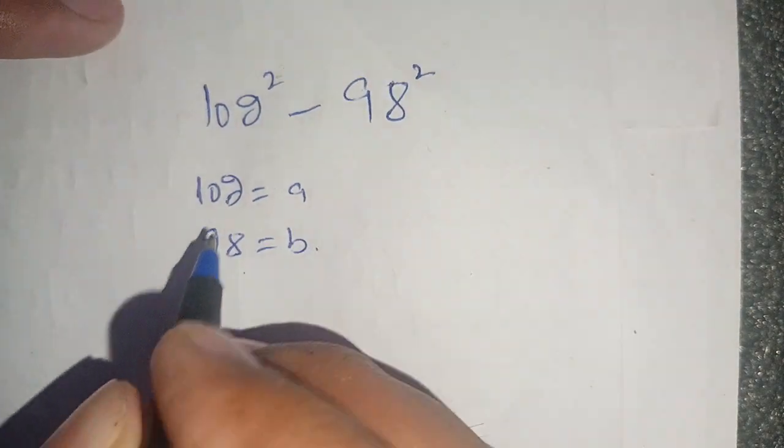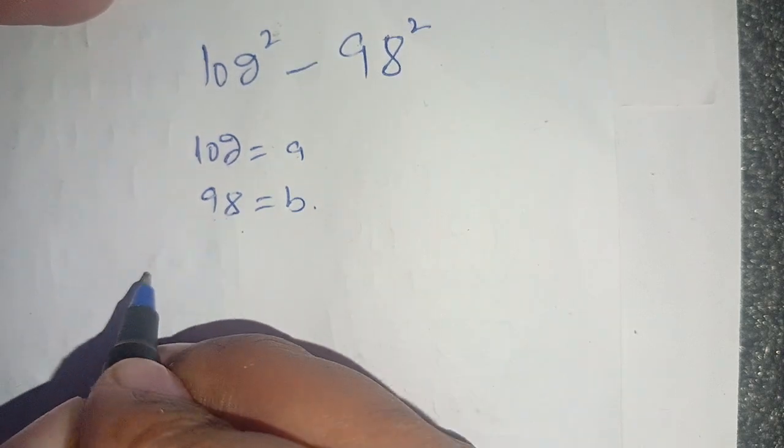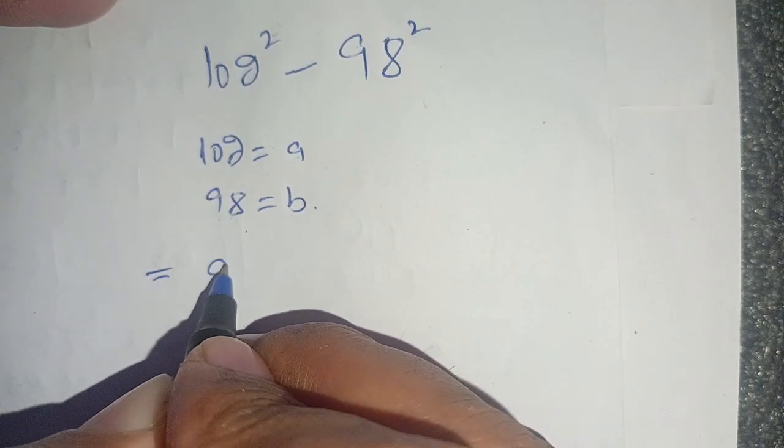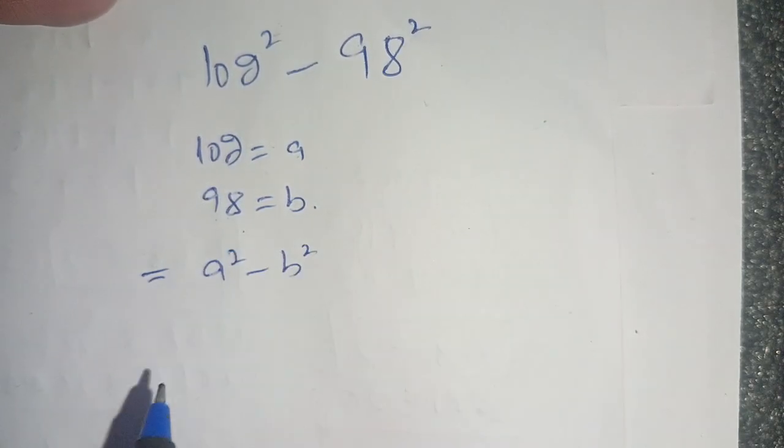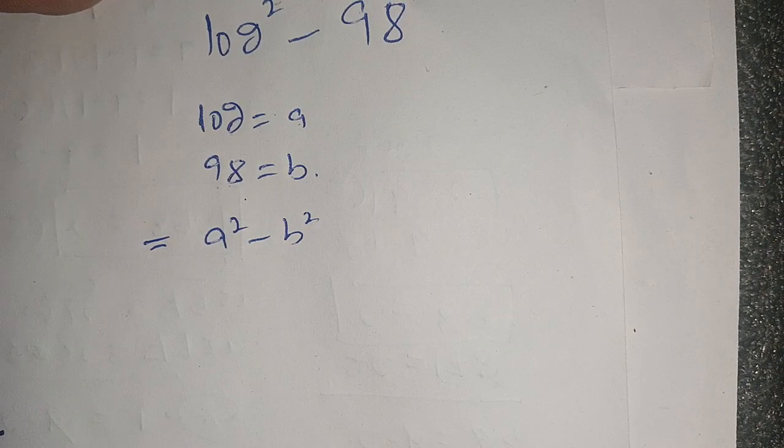In place of 102 we substitute a, in place of 98 we substitute b. Thus our problem will become a squared minus b squared. We know that a squared minus b squared is equal to (a plus b) times (a minus b).